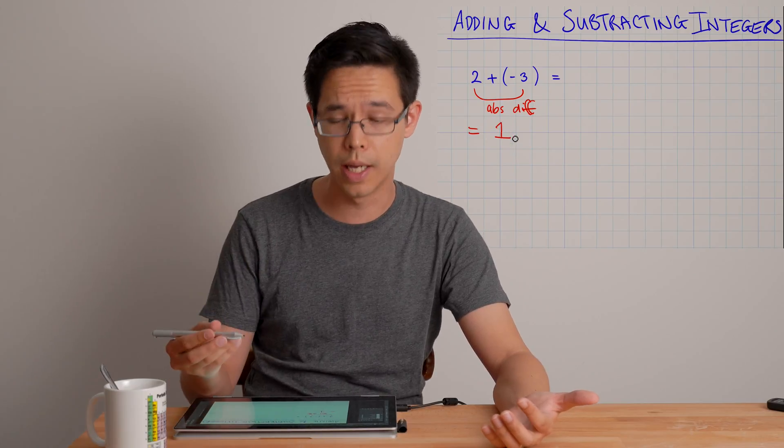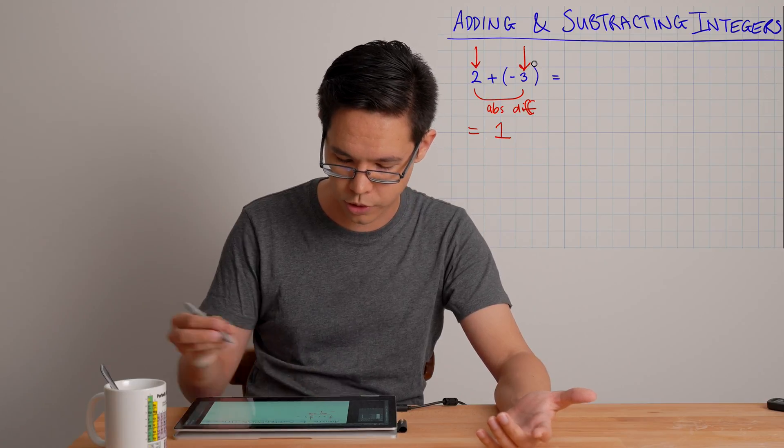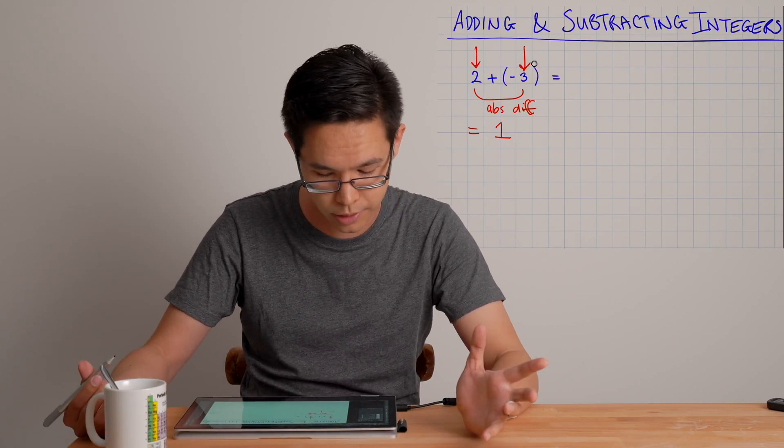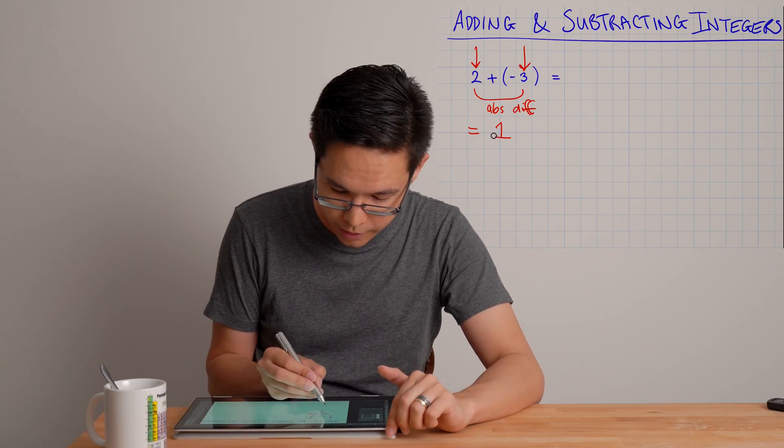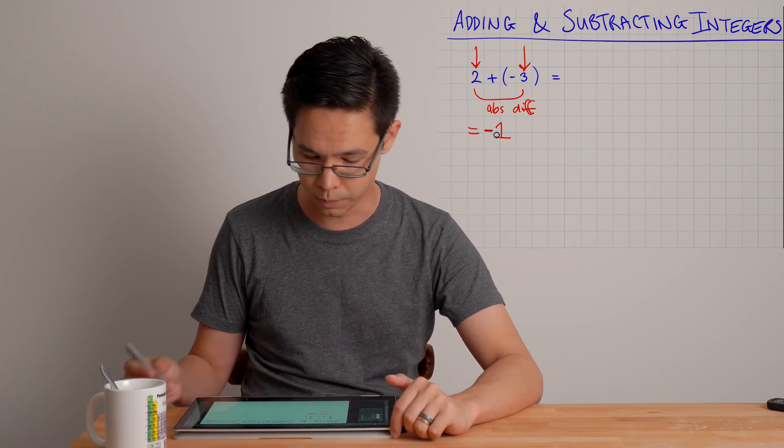Then I look is it a negative 1 or a positive 1, where I examine the question: is the positive part of the question or the negative part of the question larger. In this case the negative is the larger part of the question so it's going to be negative 1 overall.